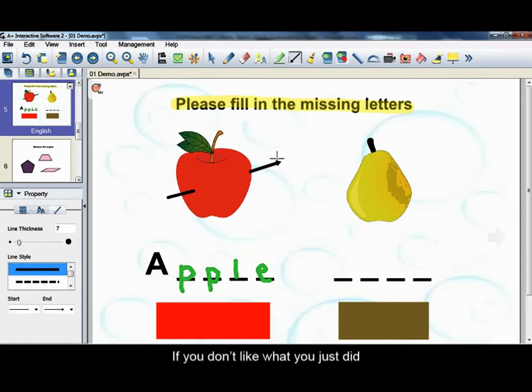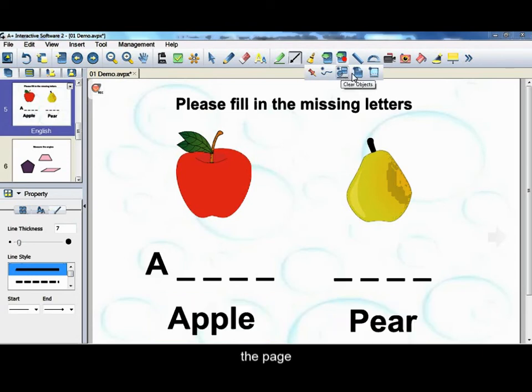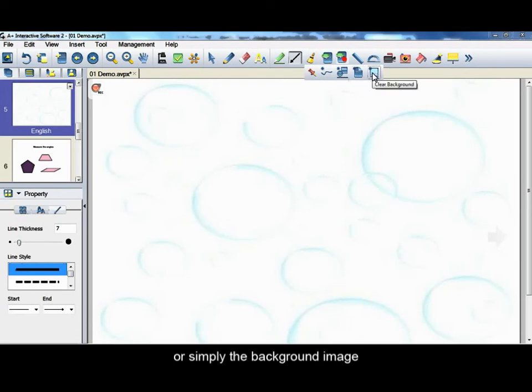If you don't like what you just did, another way to quickly delete them is to use the clear function. You can choose to clear just the annotations, just the objects, the page, or simply the background image.